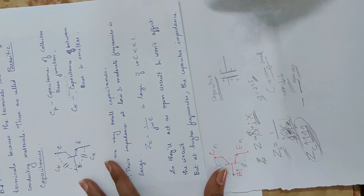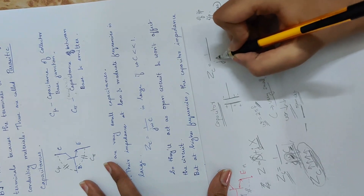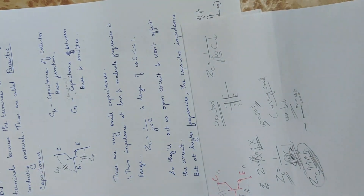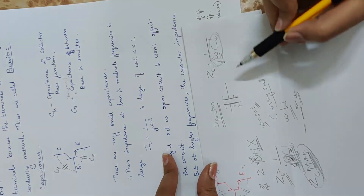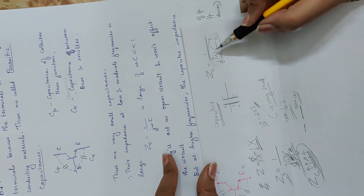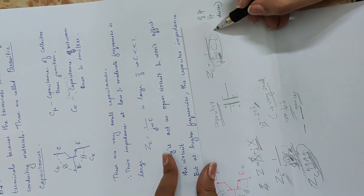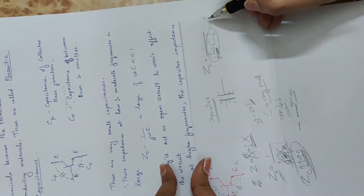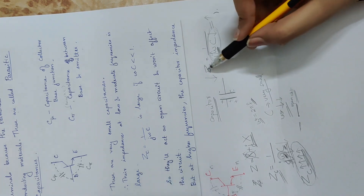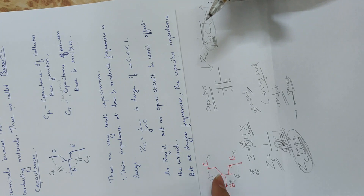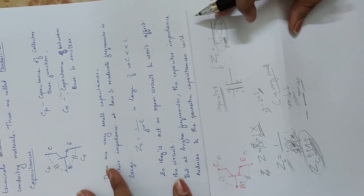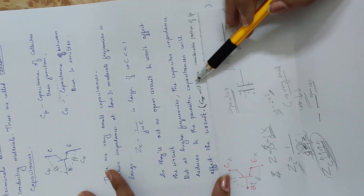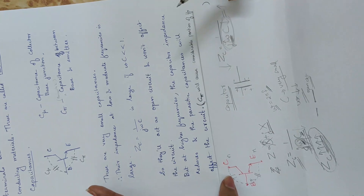At higher frequencies, the equation Zc = 1/(jωC) shows that as frequency increases, the denominator (ωC) increases. So the impedance decreases. At very high frequencies, the impedance becomes small — the capacitor no longer behaves as an open circuit.